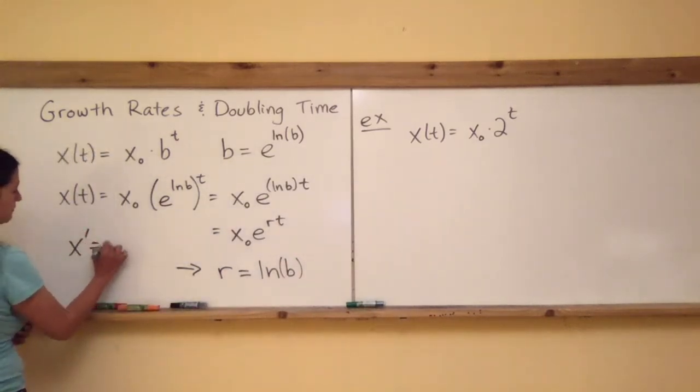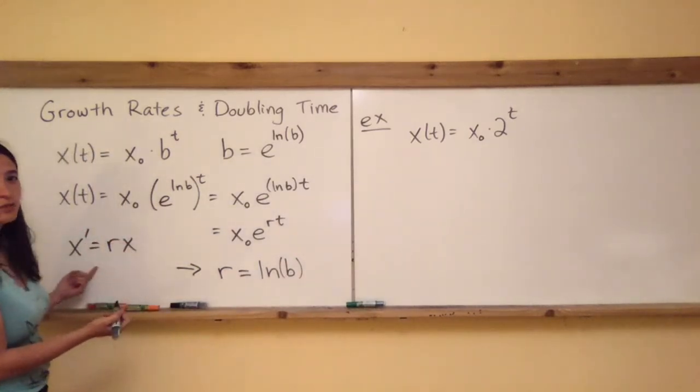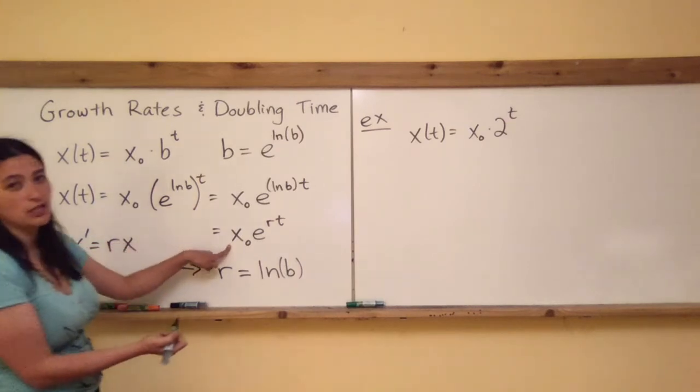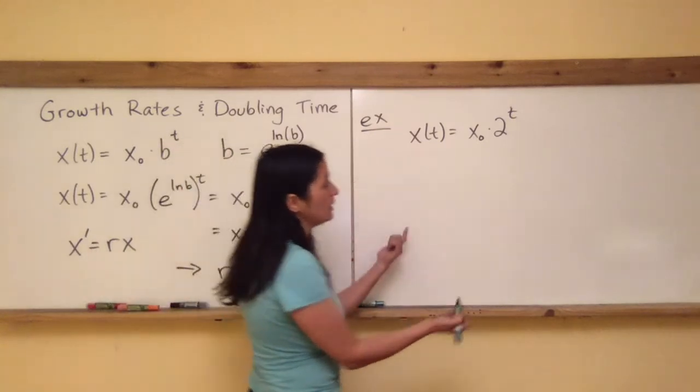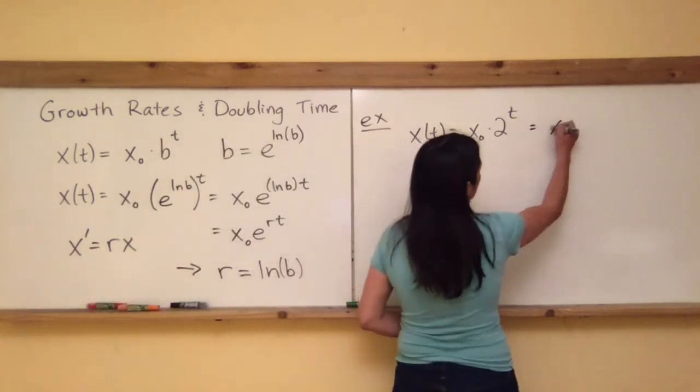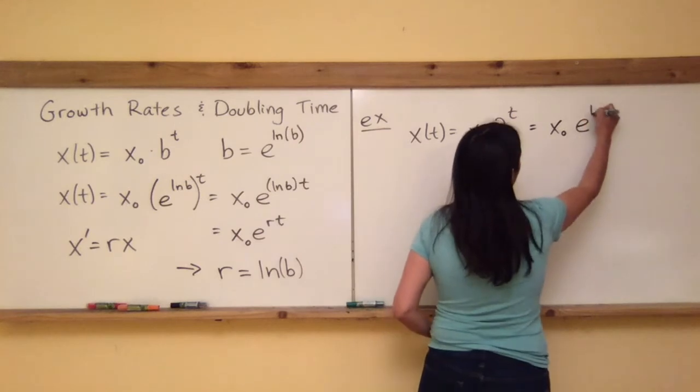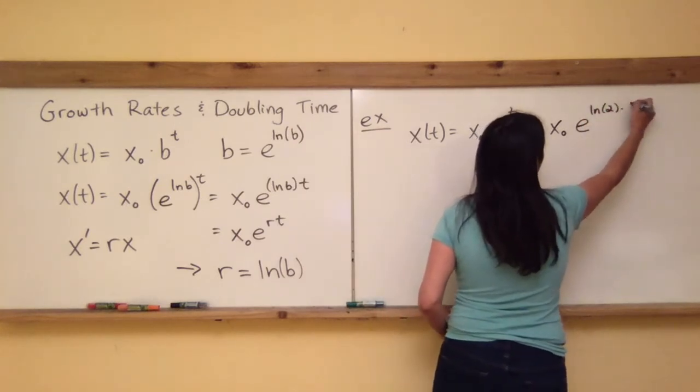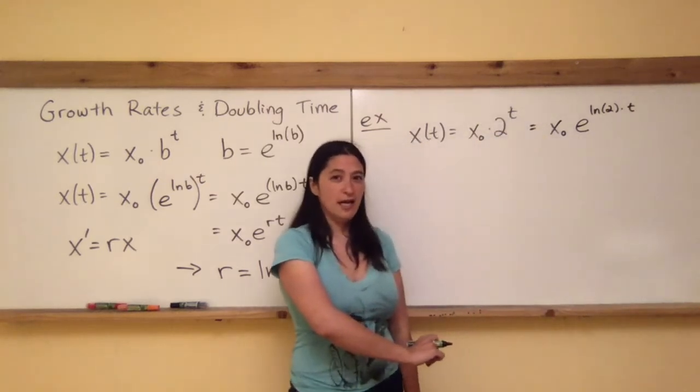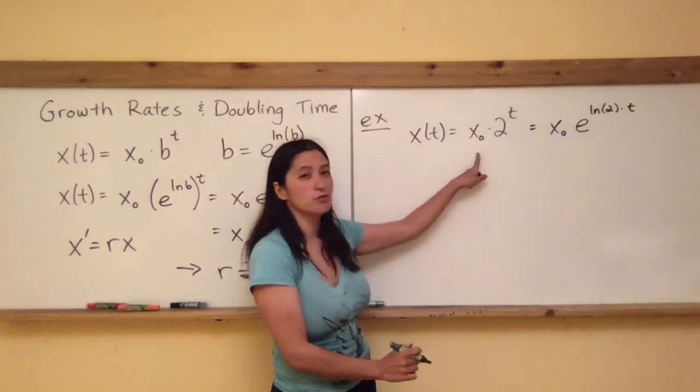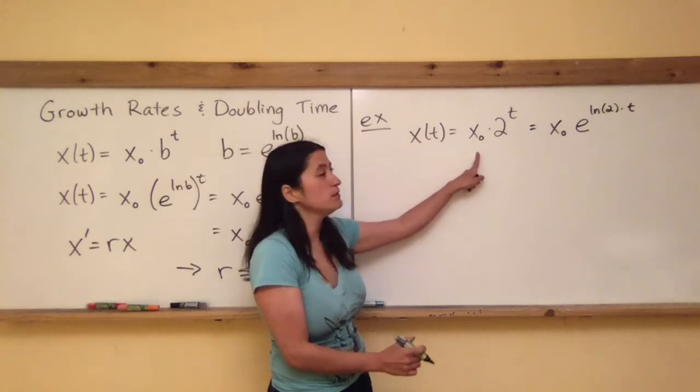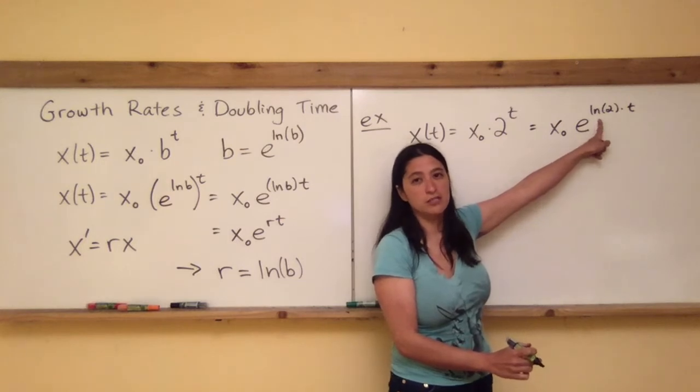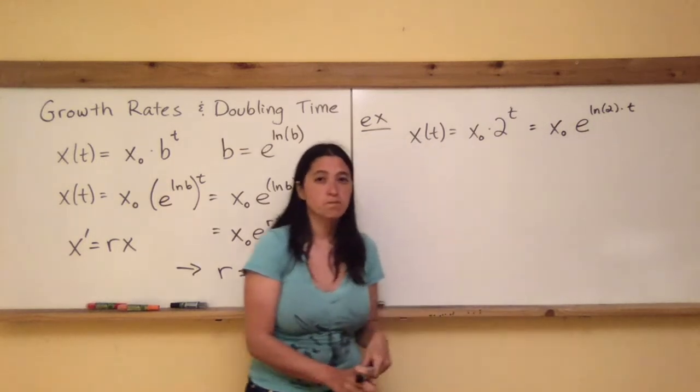But in order to have it match up with the magical state equations that we were talking about before, remember the magic of X' = RX is solved with X(t) = X₀e^(RT). In order to match that up, I'm actually going to want to rewrite this as X₀ times e^(ln(2)·T). And so the continuous growth rate for something that doubles once per time unit is R = ln(2).